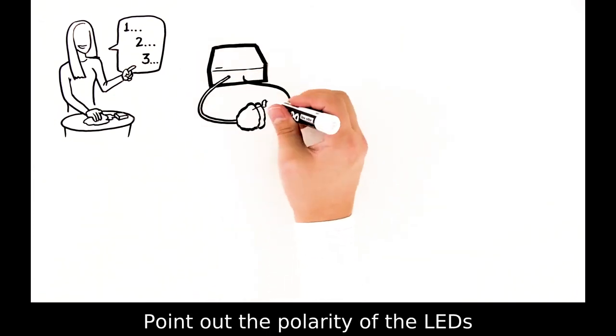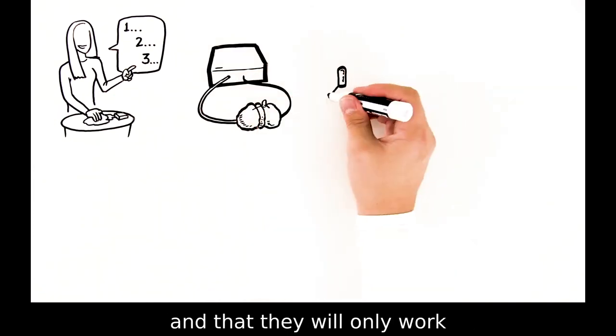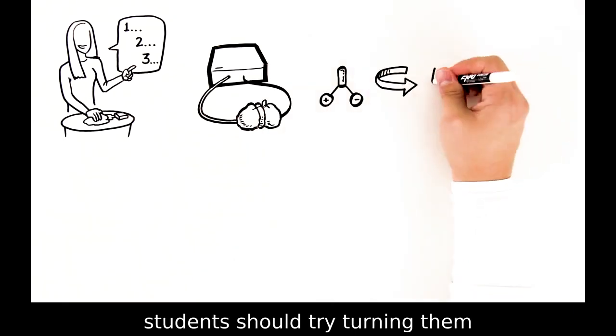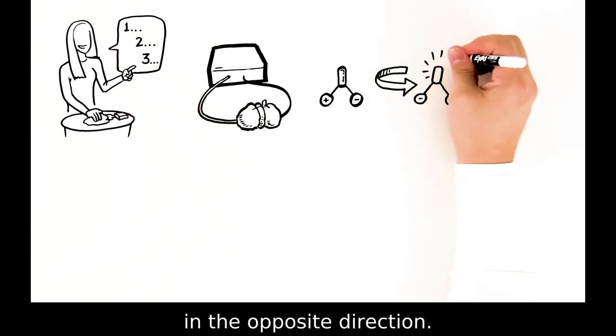Point out the polarity of the LEDs and that they will only work if turned the right way. If the LEDs aren't lighting up, students should try turning them around so the leads are attached in the opposite direction.